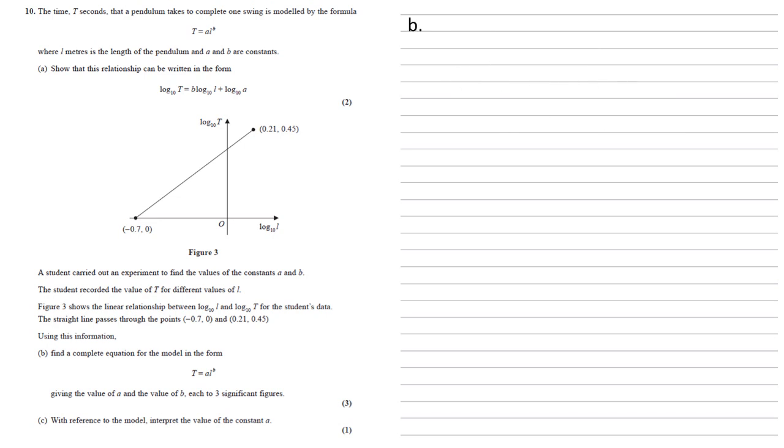A student carried out an experiment to find the values of the constants a and b. The student recorded the value of t for different values of l. Figure 3 shows the linear relationship between log base 10 l and log base 10 t for the student's data. The straight line passes through the points (-0.7, 0) and (0.21, 0.45).